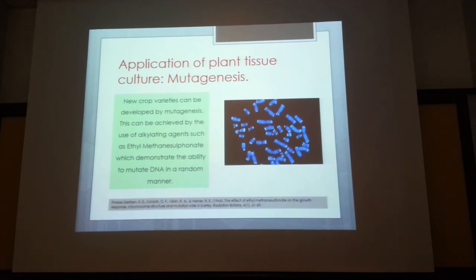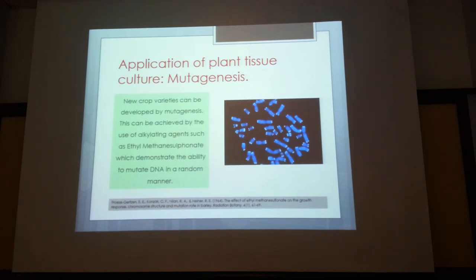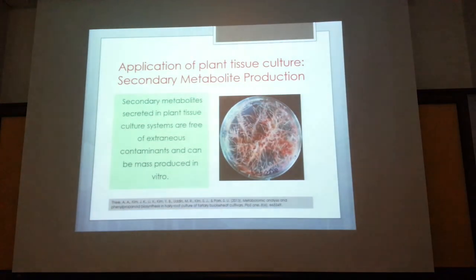If you develop a new species using mutagenesis, you can register it as a plant variety under the Plant Variety Protection Act. All you need is your plant, photographs of the fruit, and you can register a new variety — a good commercial opportunity.